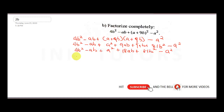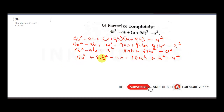Collecting like terms: 4b² + 81b² = 85b²; then −ab + 18ab = 17ab; and a² − a² = 0. So the expression simplifies to 85b² + 17ab.